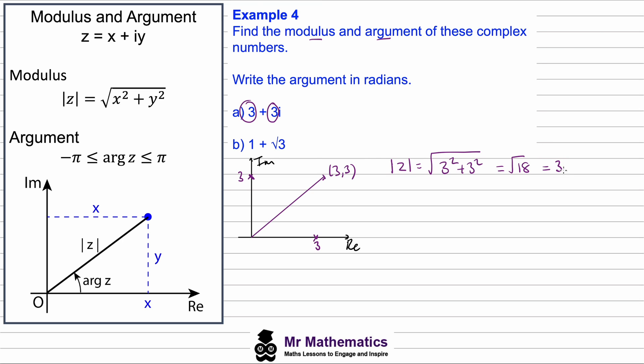Which we can simplify to make 3√2. And then for the argument of a complex number, well, the argument always goes from -π to π, so it goes from the real axis from 0 to π or from 0 to -π.